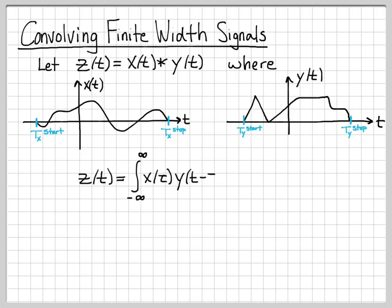And what we're going to do is we want to evaluate this quantity. Z of t is equal to the integral from minus infinity to infinity of x of tau, y of t minus tau d tau. And this is what we know to be the convolution integral.